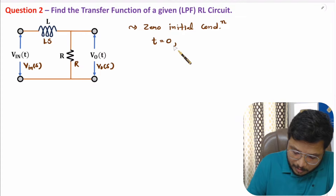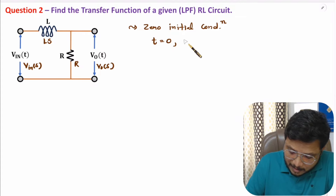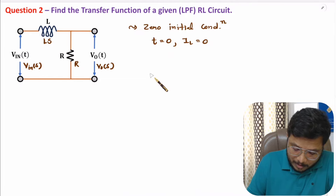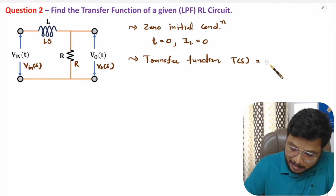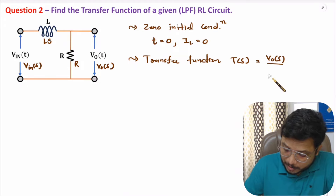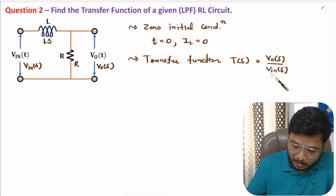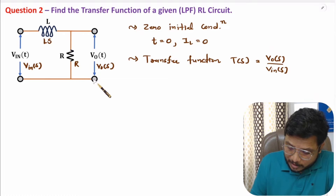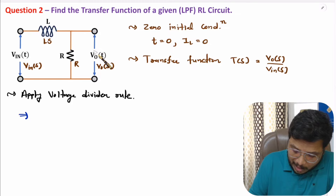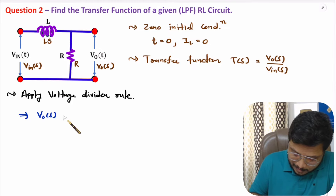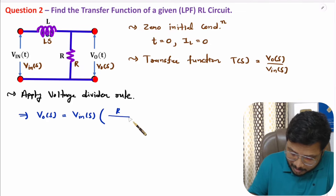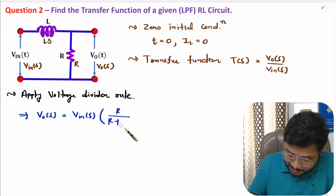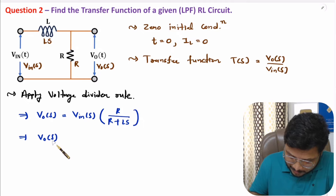We consider zero initial conditions, so at t = 0 energy inside the inductor is zero, meaning current through the inductor is zero. The transfer function T(s) = Vo(s) / Vin(s). Applying the voltage divider rule, output voltage Vo(s) = Vin(s) × R divided by total impedance R + Ls.